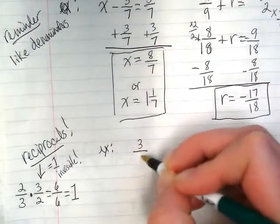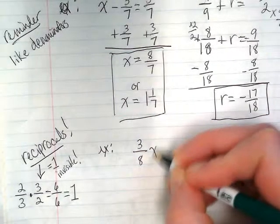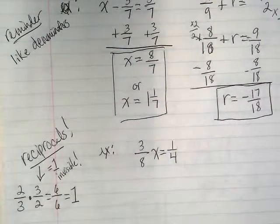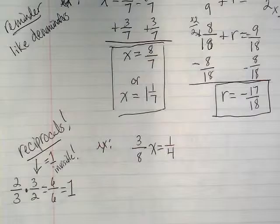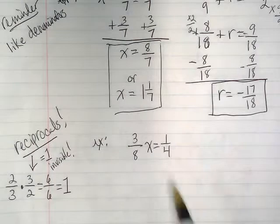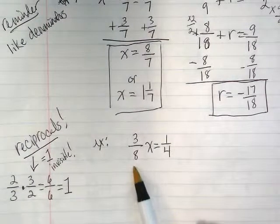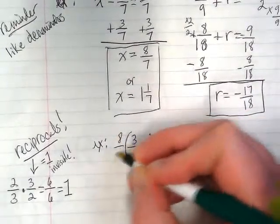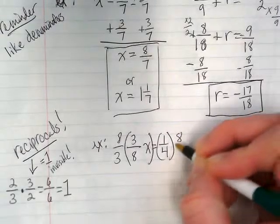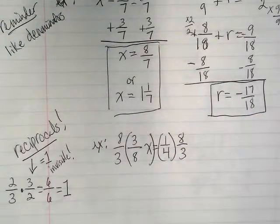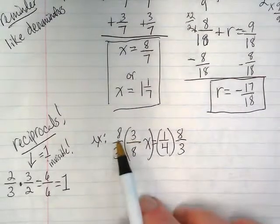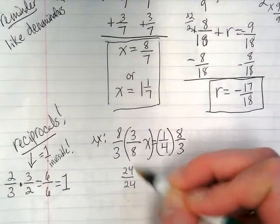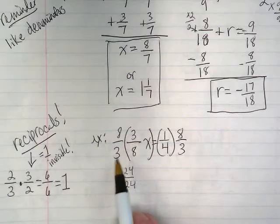So let's start off with an example of 3 8ths x equals 1 4th. We're looking for the reciprocal of the fraction with the variable, so we're going to do the reciprocal of 3 8ths, which is going to be 8 over 3. And if I do it to the left side, I also have to do it to the right side. 8 over 3 would become 24 over 24, because 8 times 3 is 24, and 3 times 8 is 24.